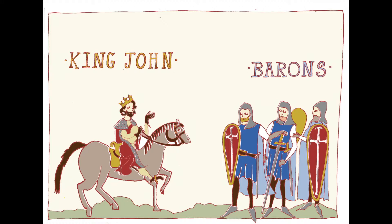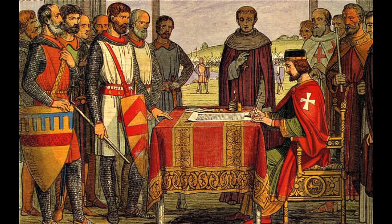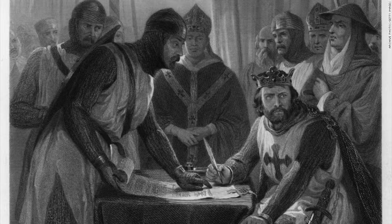Eager to secure their rights against a despotic king, the barons met King John at Runnymede, forcing him to agree to a charter that offered them certain protections. This was the first version of the Magna Carta.